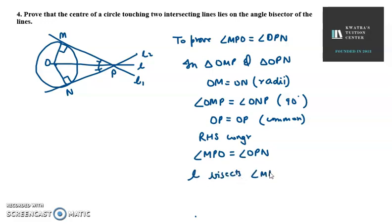MPN को bisect कर रही है, two equal parts में. इसका मतलब जो हमारा point O है, it lies on the bisector of the angles between L1 and L2. O lies on the bisector, एक bisector की तरह काम कर रहा है of the angles